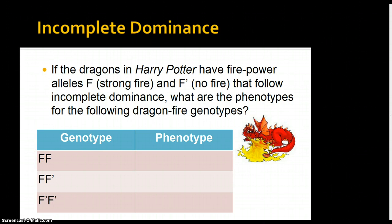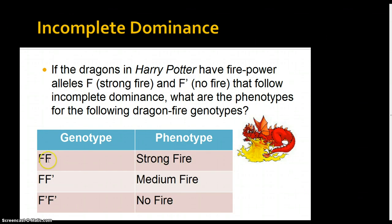Here's a Harry Potter example for incomplete dominance. If dragons have firepower alleles — F for strong fire and F' for no fire — what would be the phenotypes for these different genotypes if this trait follows incomplete dominance? Two F alleles give strong fire. One F and one F' give medium fire. And two F' give no fire. So again, the heterozygous form has a blend or midpoint between the two genotypes.